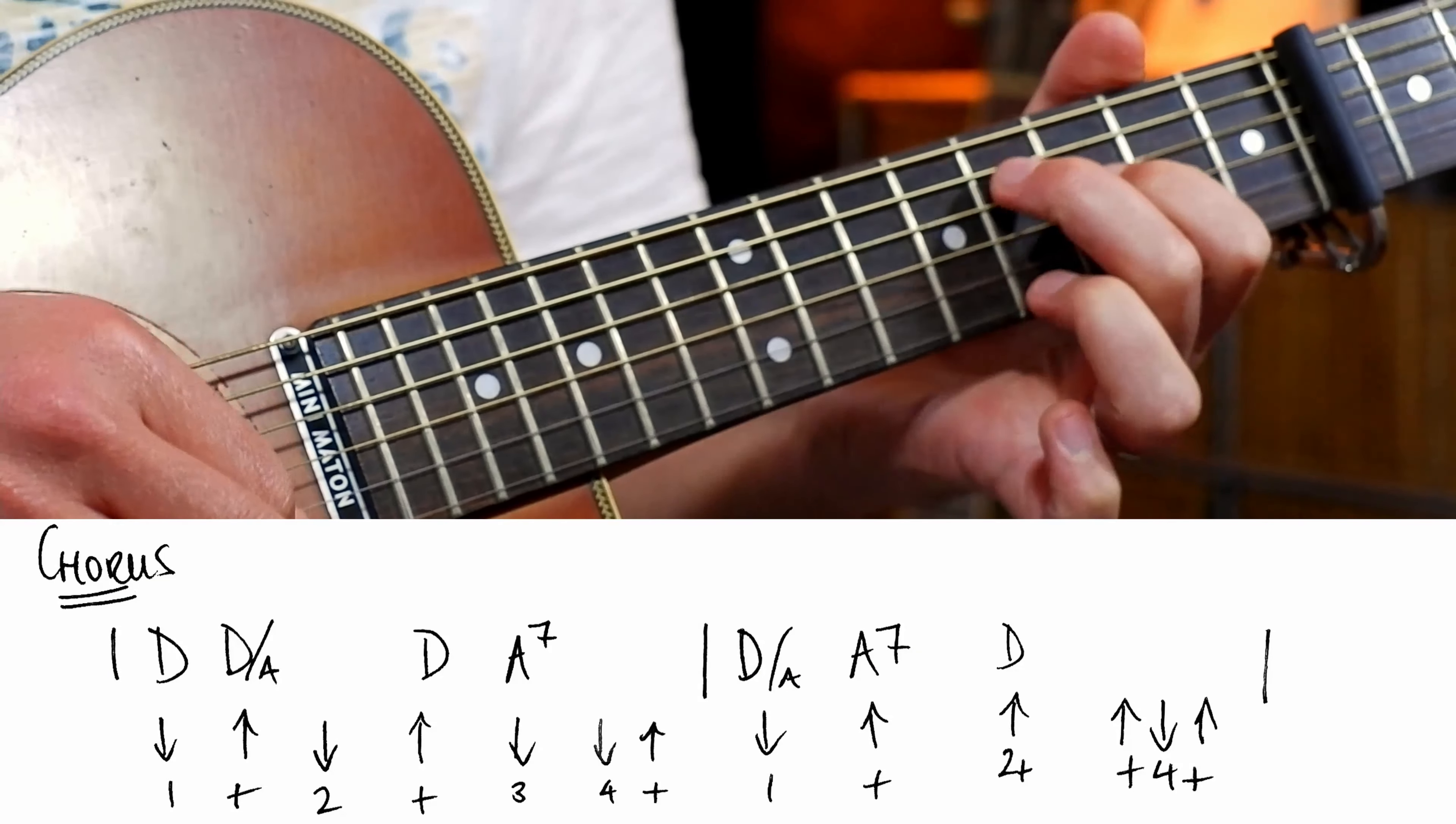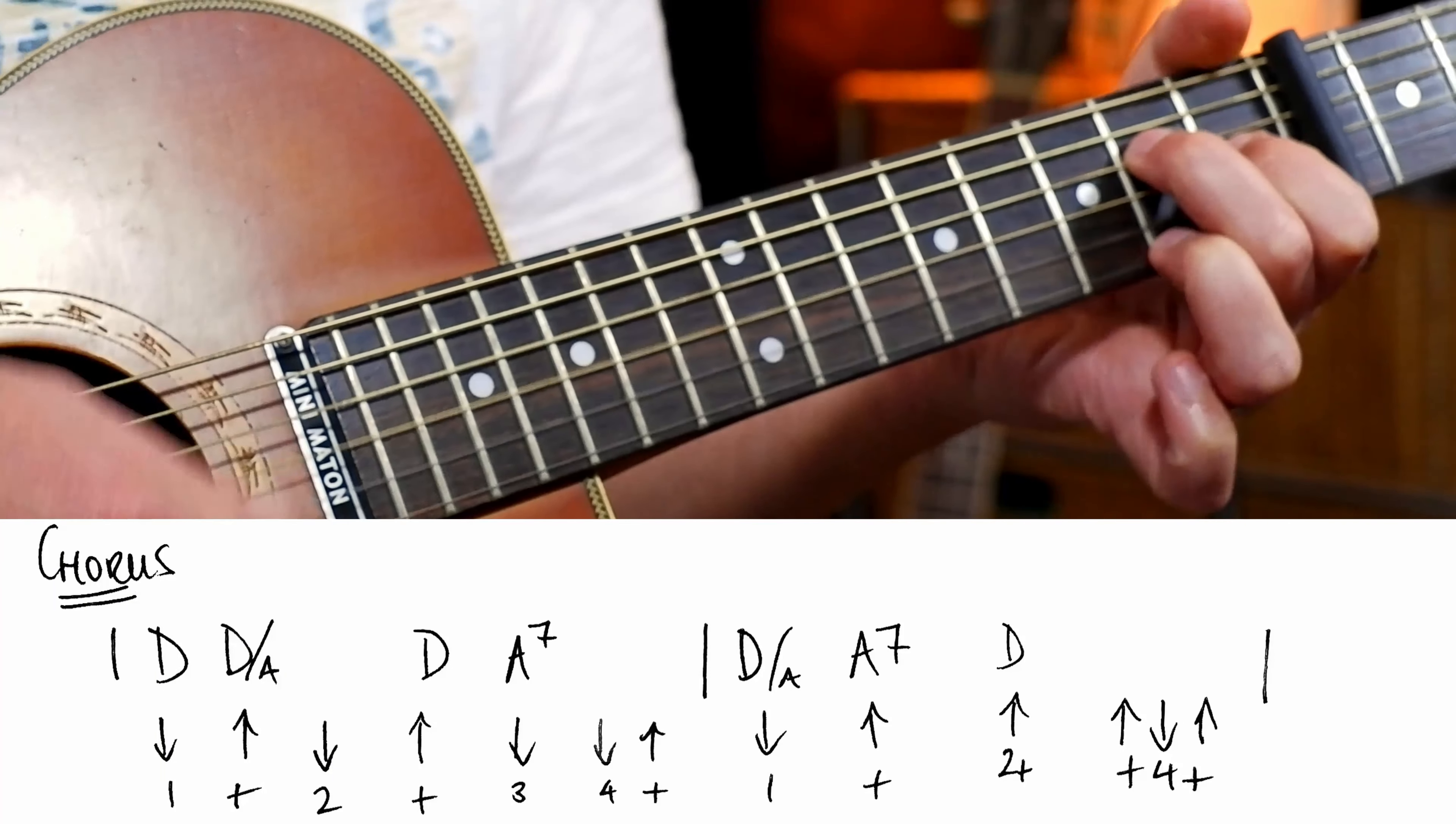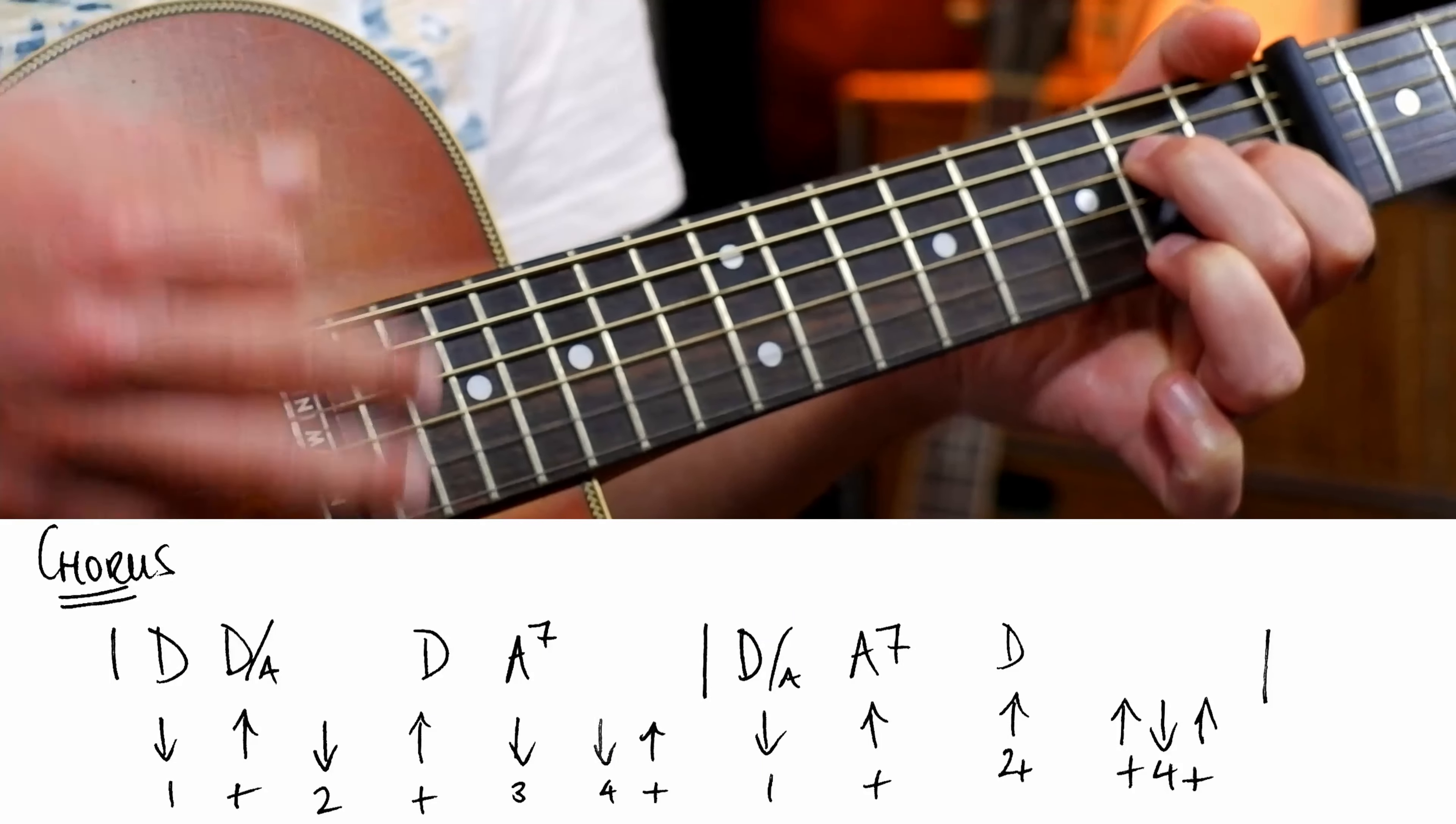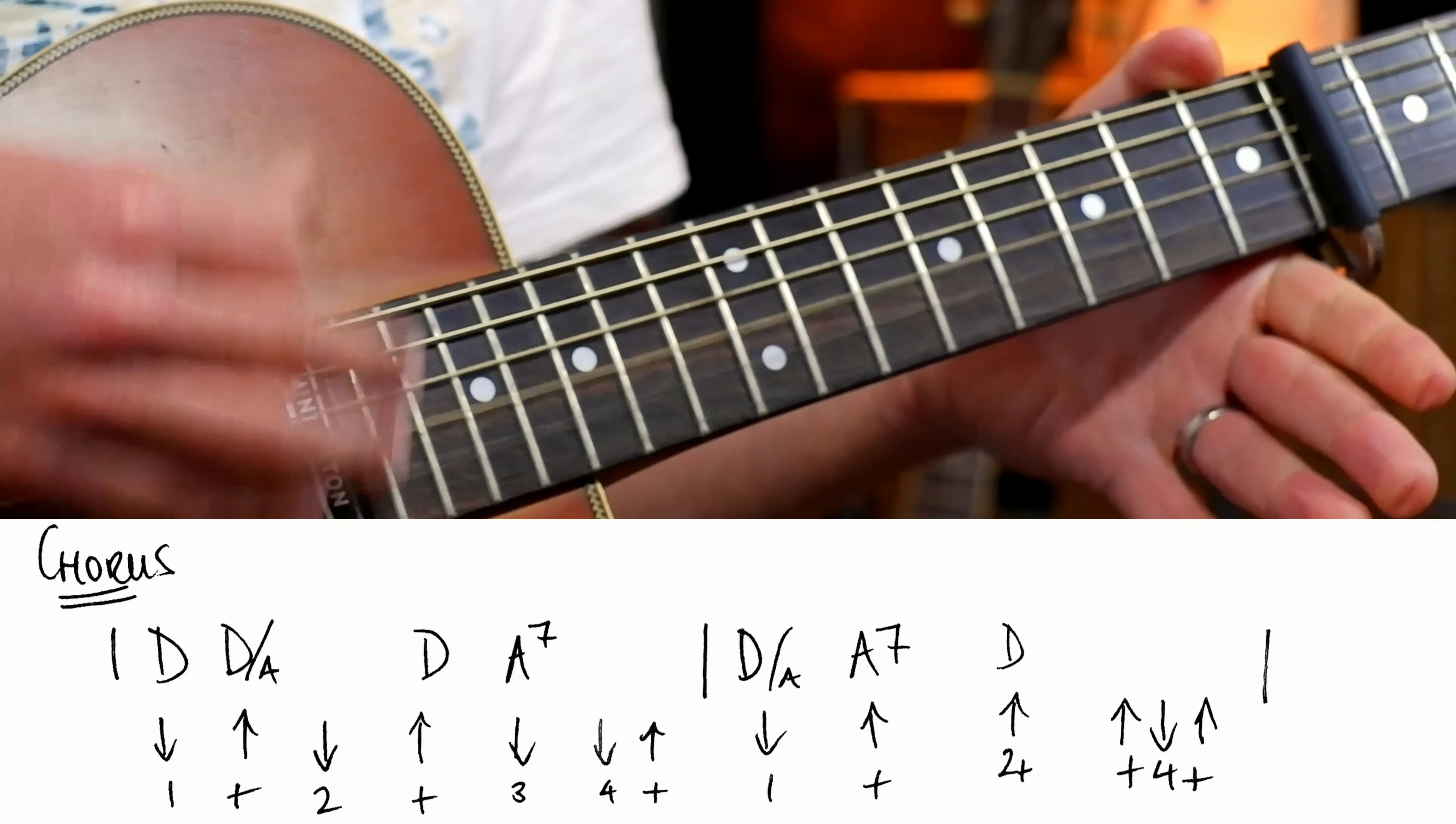We start off on an open, and then we're gonna go on the up to this D with an A bass chord. So we're gonna get... Sounds a bit like that. Bit, right? So... A7. So... A7. Open. So let's play that together. All right, then we're gonna come back up, and we're gonna go... So that's three strums. Okay.